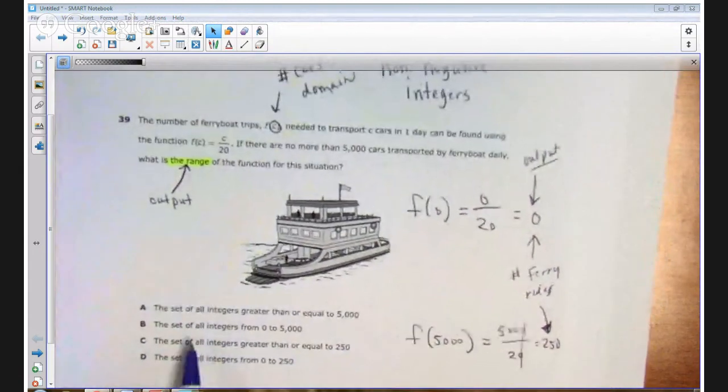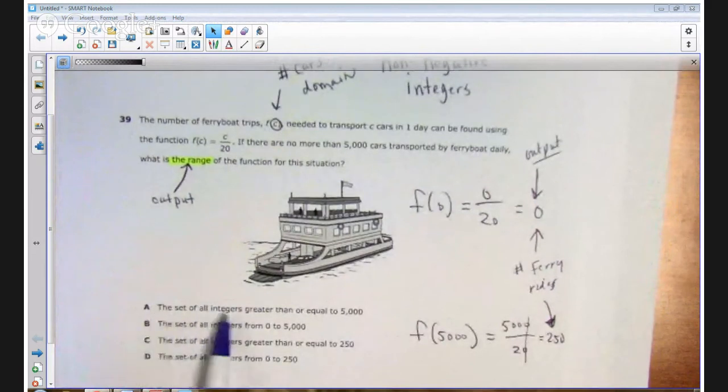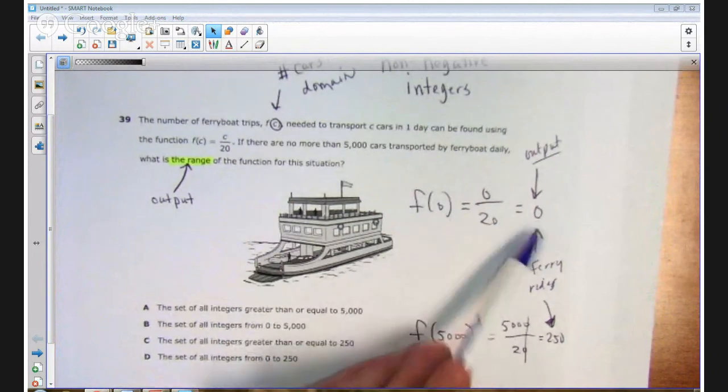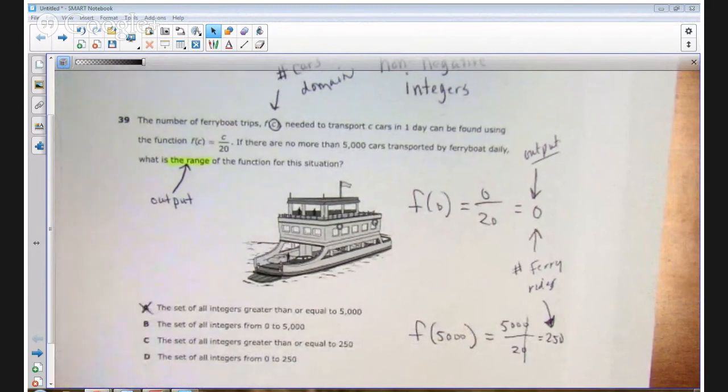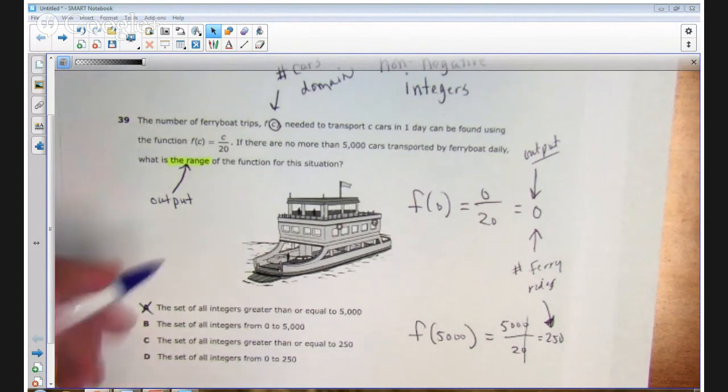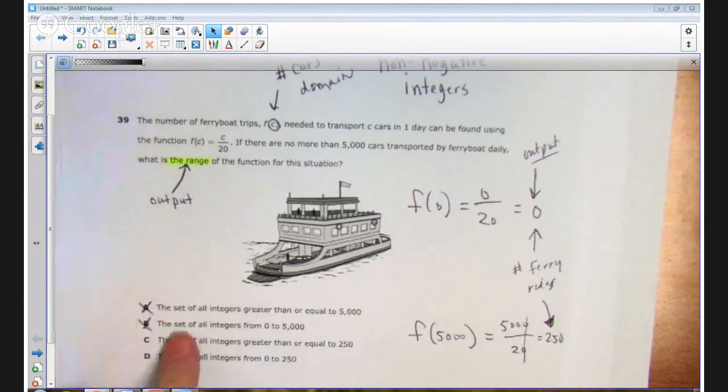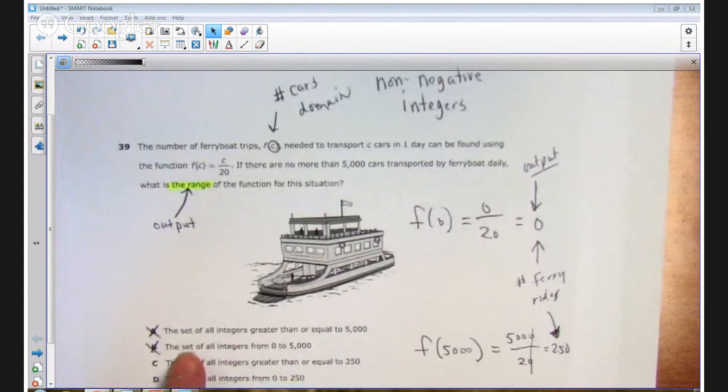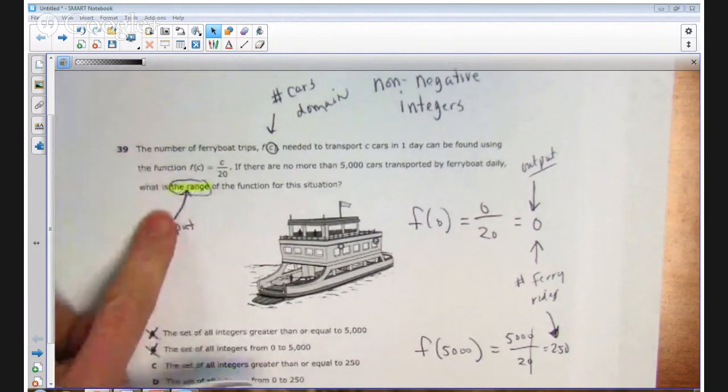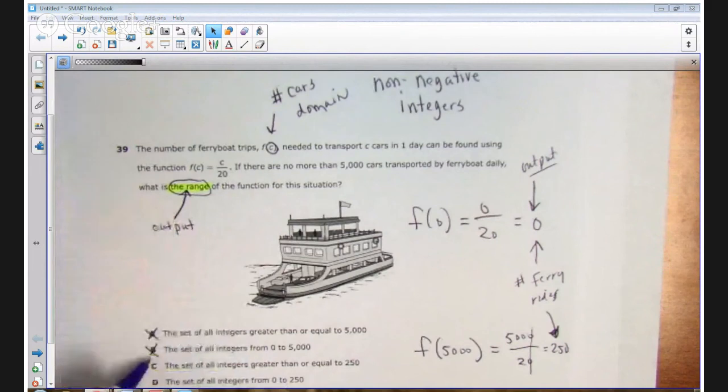So if we look at all the answer choices, the first answer choice says the set of all integers greater than 5,000. Well, no, the output has to be between 0 and 250. So I know that A is incorrect. For B, the set of all integers between 0 and 5,000, well, actually, that is the domain of the function. And this, by the way, was the most common answer. So it makes me think that students were confusing domain and range, and they were actually finding the domain and not the range of the function, which is what it's asking for. So B is also incorrect.